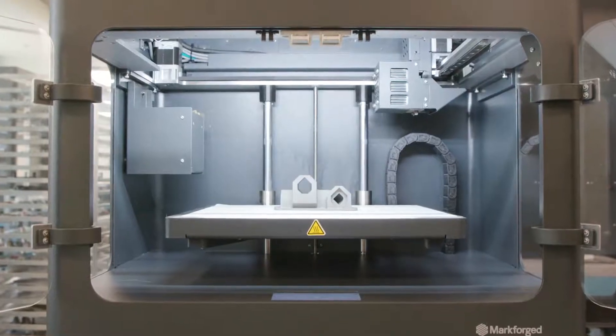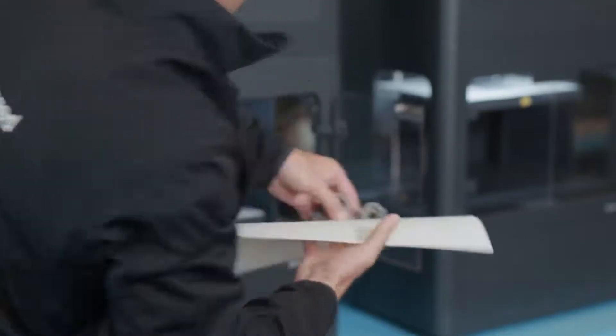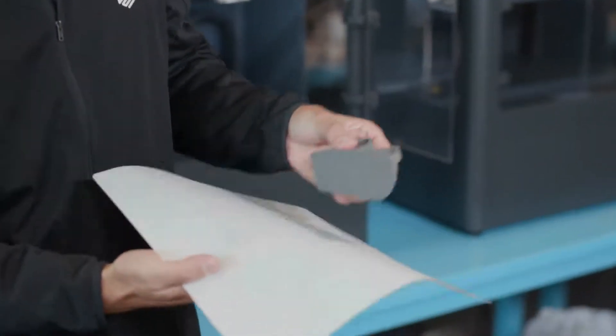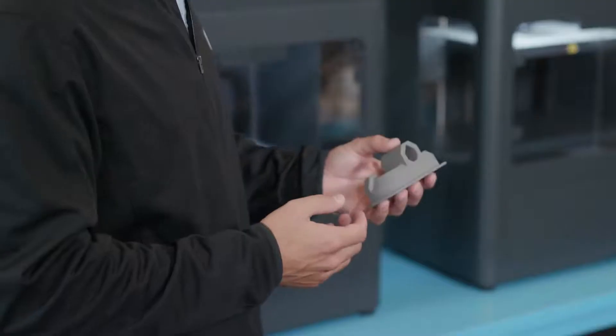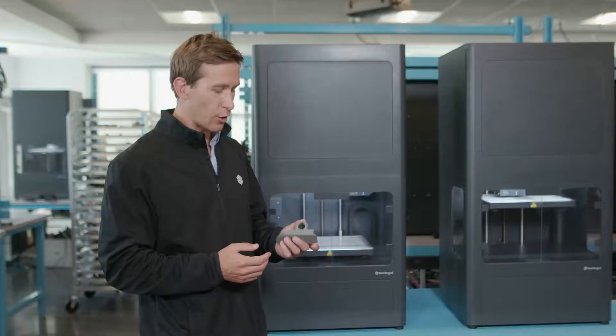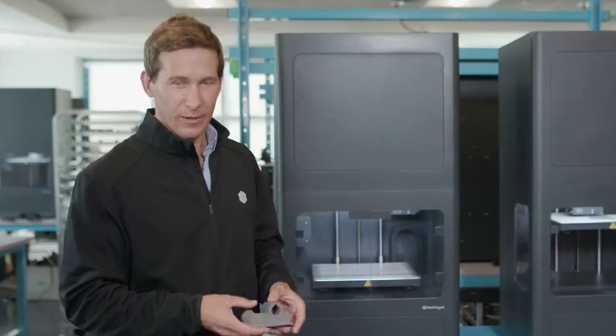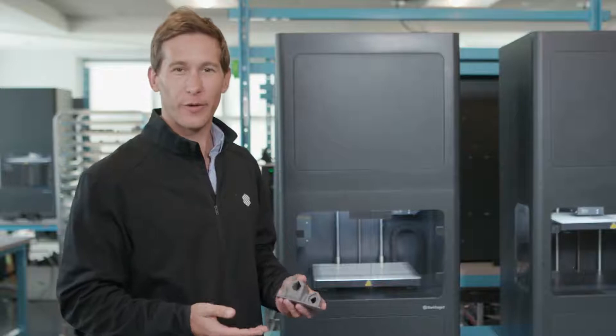Once your part is finished printing, you'll get a notification. At this point, you can go to the printer, remove the part from the build tray, and clear the bed. Now we have what's called a green part. It doesn't really look or feel like metal, however, a large part of it is comprised of metal powder. Next step, we'll be putting it into wash one for the debind process.